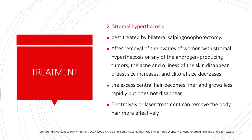Stromal hyperthecosis is best treated by bilateral salpingo-oophorectomy. After removal of the ovaries in women with stromal hyperthecosis or any of the androgen-producing tumors, the acne and oiliness of the skin disappear, breast size increases, and clitoral size decreases. The excess central hair becomes finer and grows less rapidly but does not disappear. Electrolysis or laser treatment can remove the body hair more effectively.